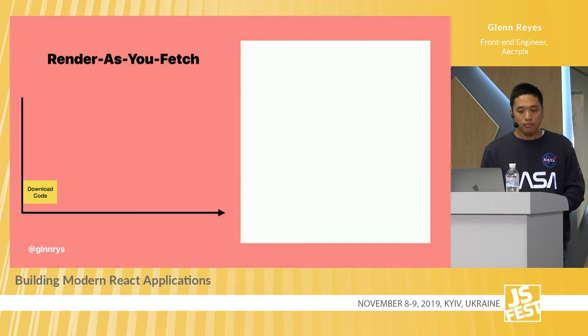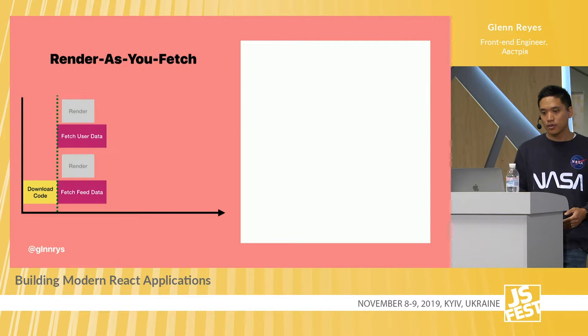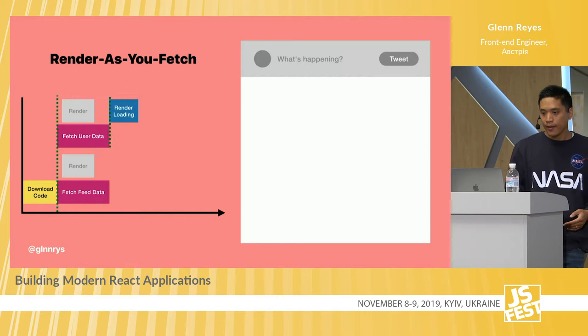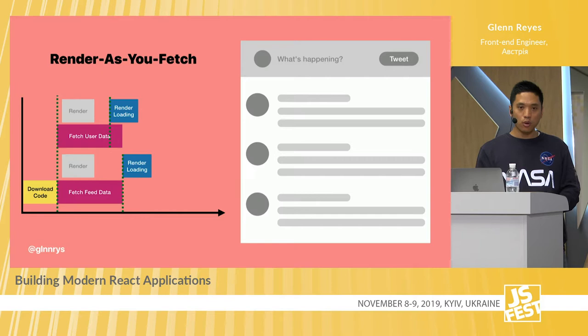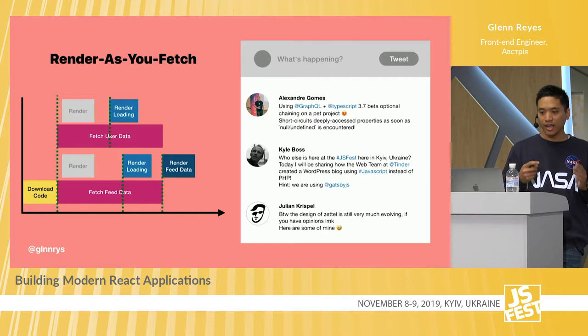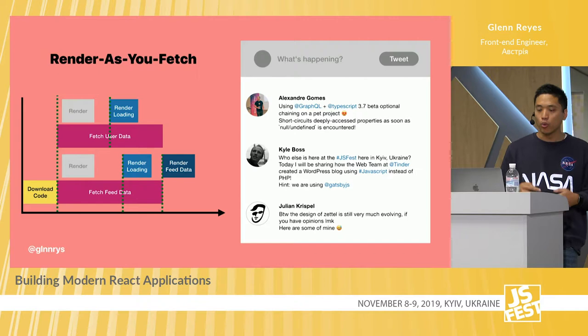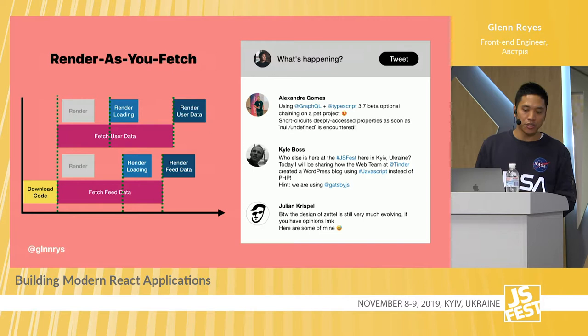In the not-best-case scenario: we download the code, fetch data, start to render, then hit a threshold and render a loading indicator for the composer. After a while, we hit the other threshold and start rendering the other loading component for our feed. Eventually we start rendering the feed data, and finally render the user data in our avatar. We have received everything and can display it in the UI. This approach dramatically impacts user experience performance-wise.